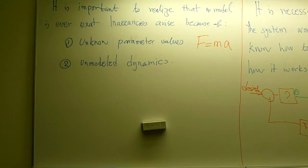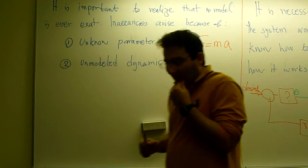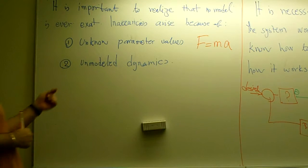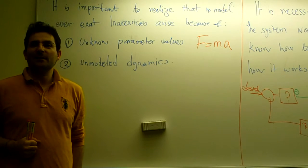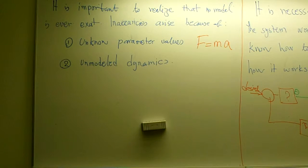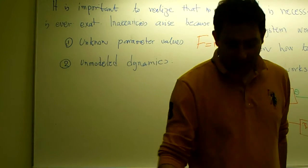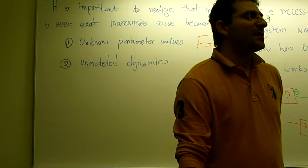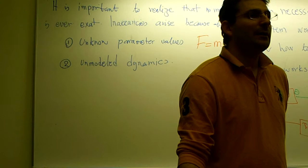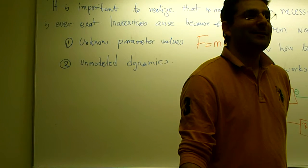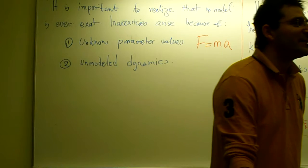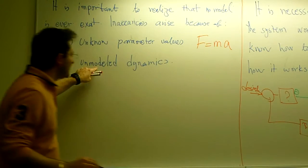Unmodeled dynamics means we want a reasonably simple mathematical model, so on purpose we choose not to model some part of the dynamics. A high school example: a car on a surface with a force applied — we assume there is no friction. Friction represents unmodeled dynamics. For high school students it keeps things simple, since they can only use a few formulas.